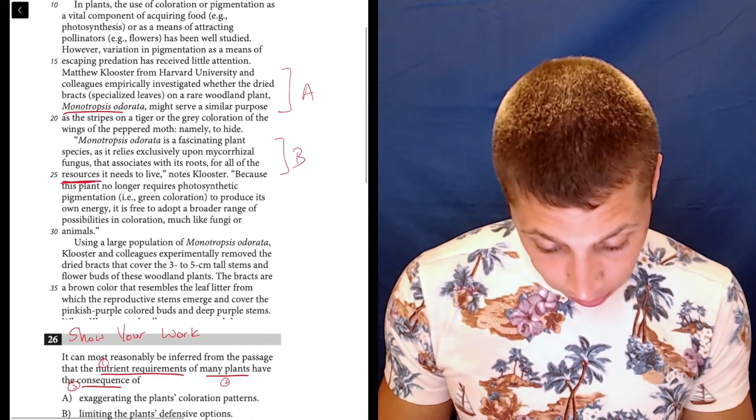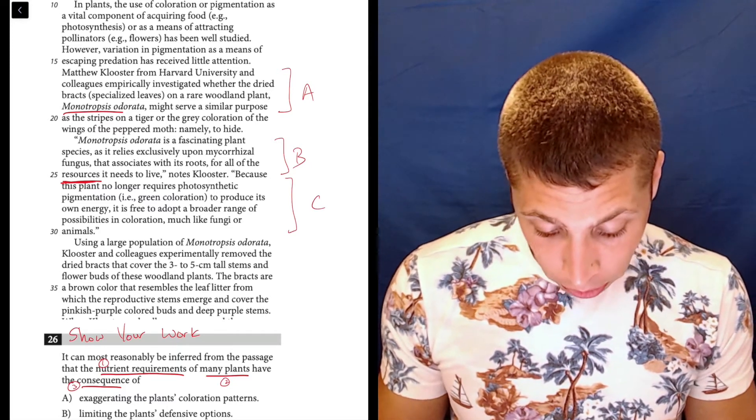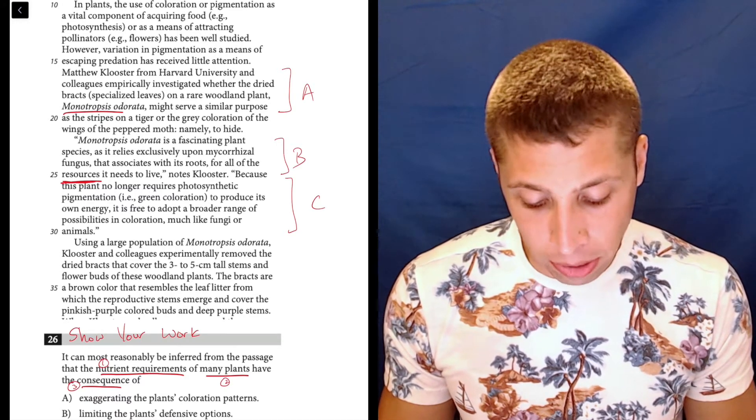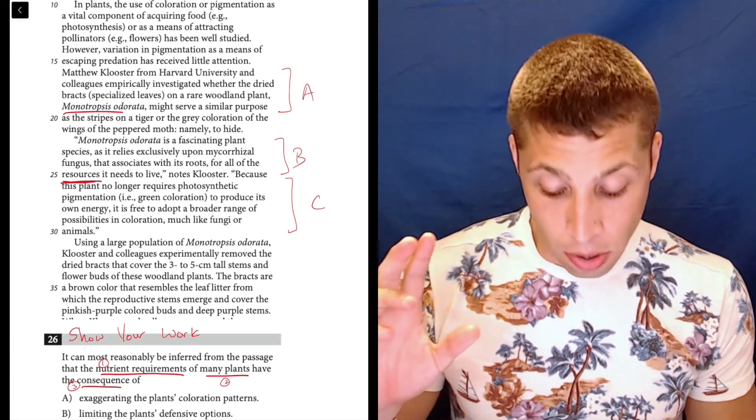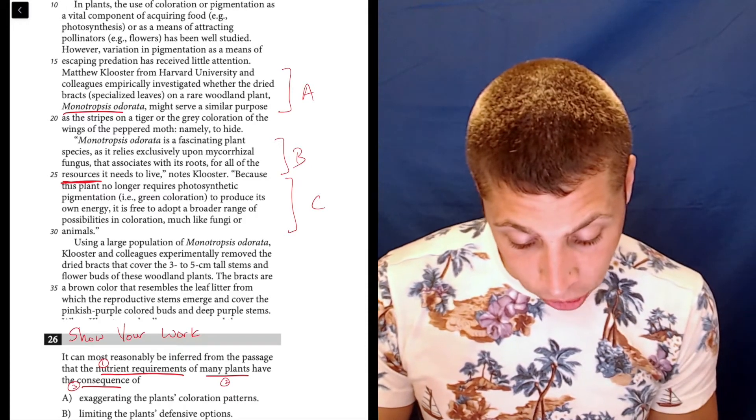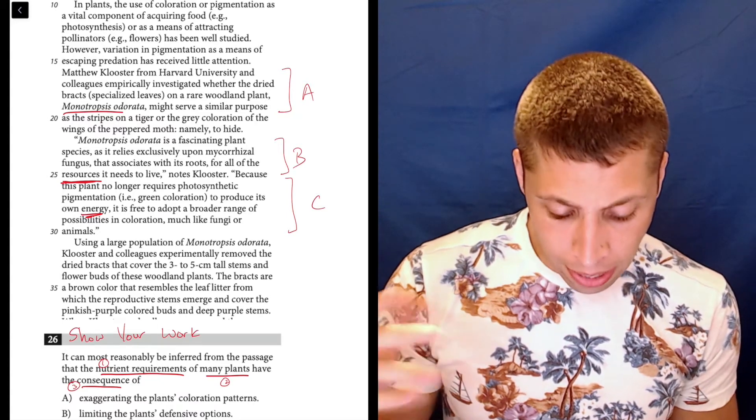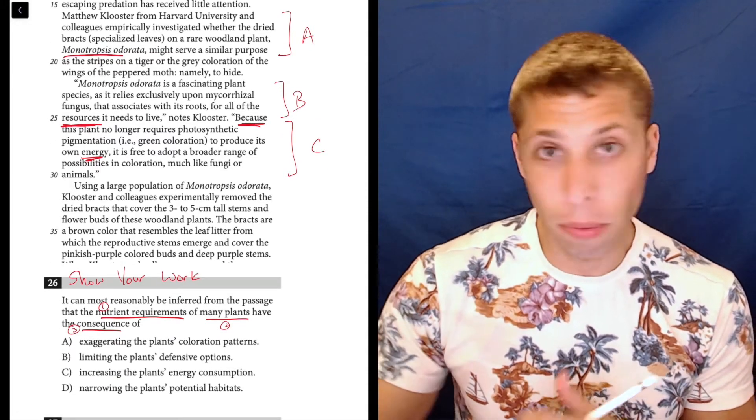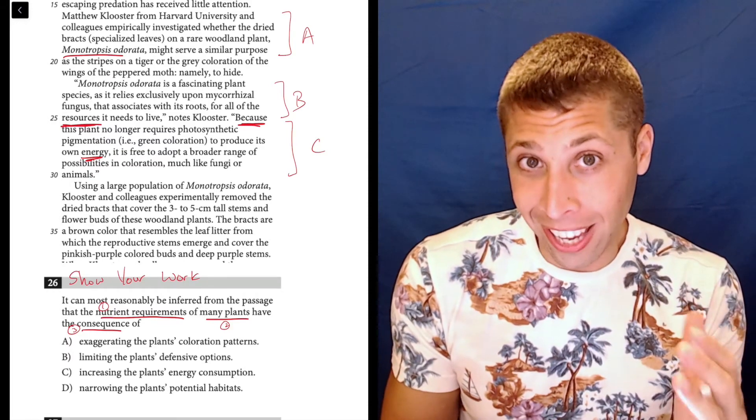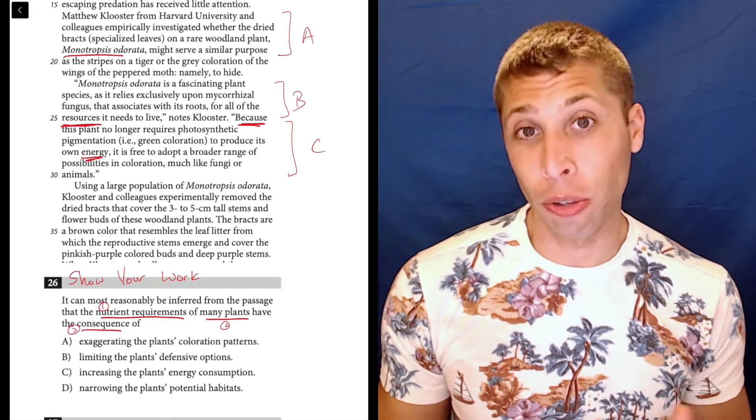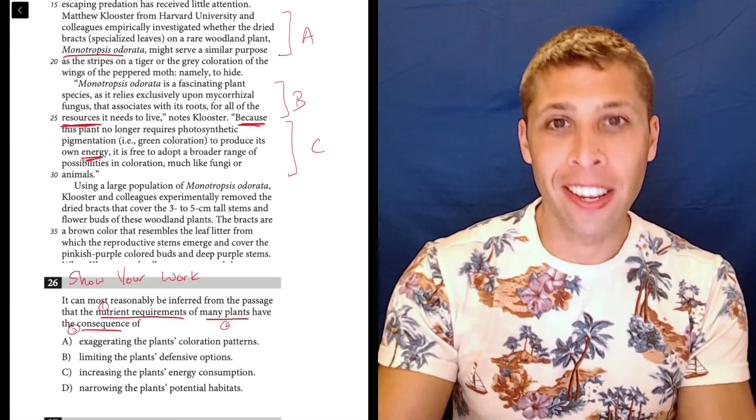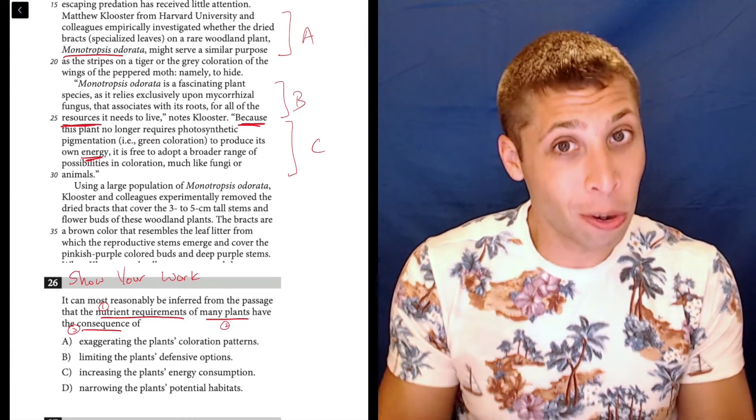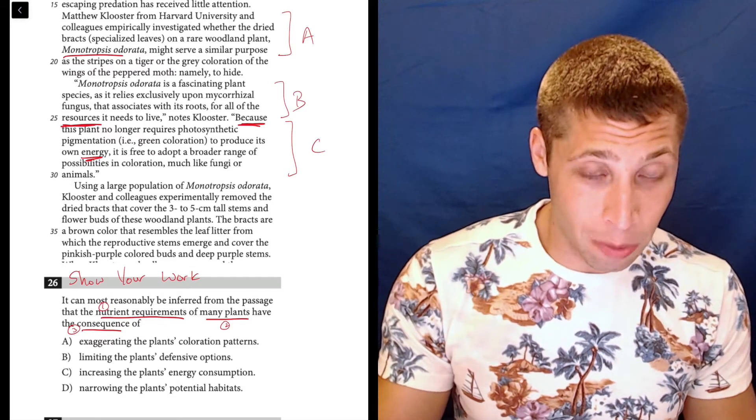Lines 25 to 30. Because this plant no longer requires photosynthetic pigmentation, i.e. green coloration, to produce its own energy, it is free to adopt a broader range of possibilities in coloration, much like fungi or animals. They are still talking about resources, because they're talking about the energy and photosynthesis. And now we've got that word 'because,' and that's kind of important, right? We were looking for a consequence of the resources. This seems like it. And this goes to show that strong words, or at least words that we should pay attention to, don't always have these big loud meanings that jump off the page. Sometimes they're the more transition-y connector words that we would normally ignore. We're looking for a 'because' here. And so, we just found one, a consequence.